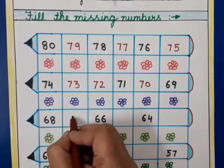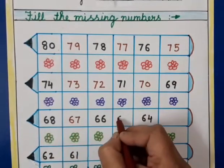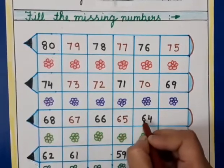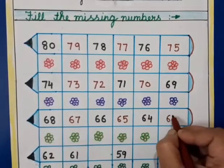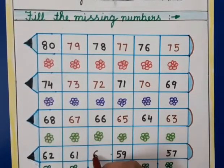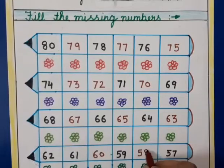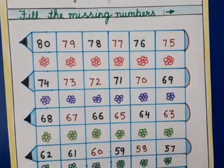68, 67, 66, 65, 64, 63, 62, 61, 60, 59, 58, 57. Now next line,